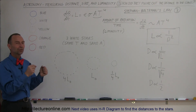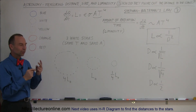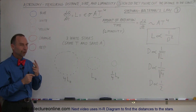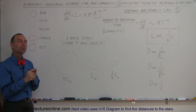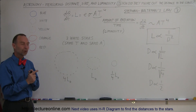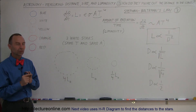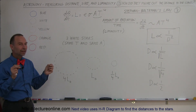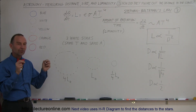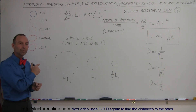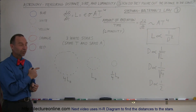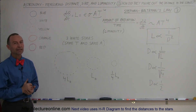In the next video I'll show you the key. There were two very smart astronomers — one named Hertzsprung and the other named Russell — who independently thought of the solution to this big problem. If you're interested, come to the next video and see how they did it.